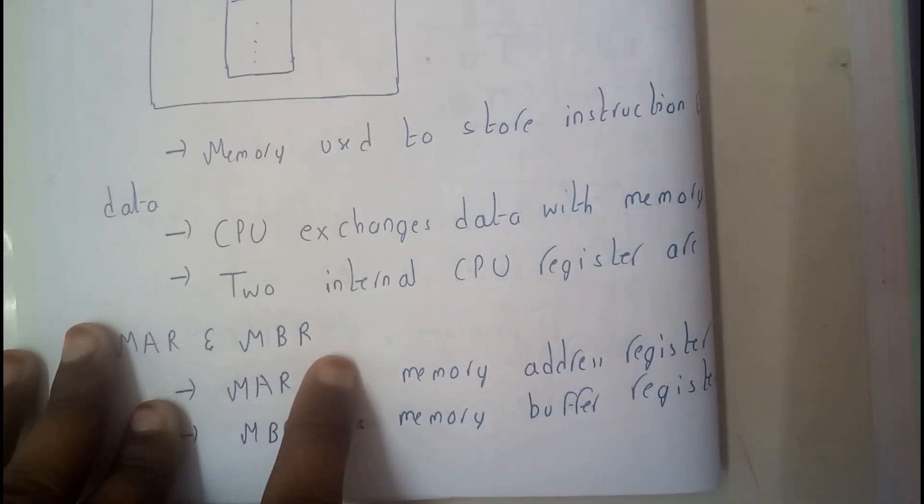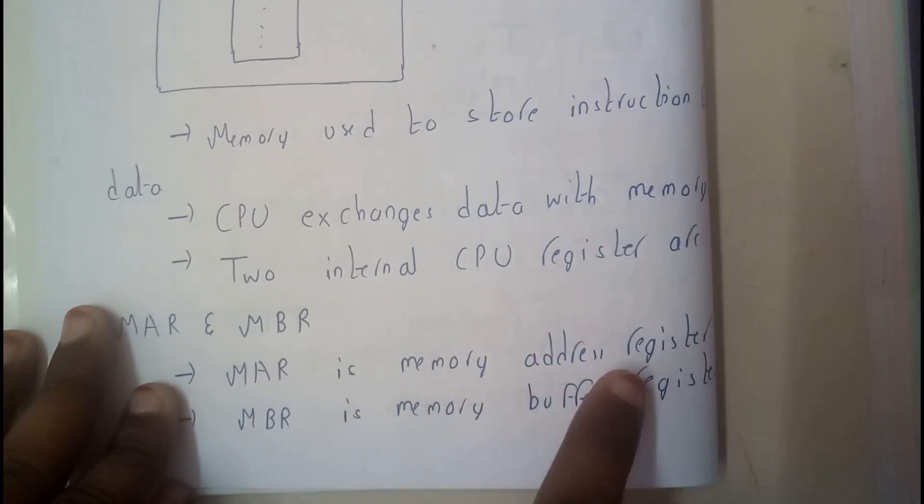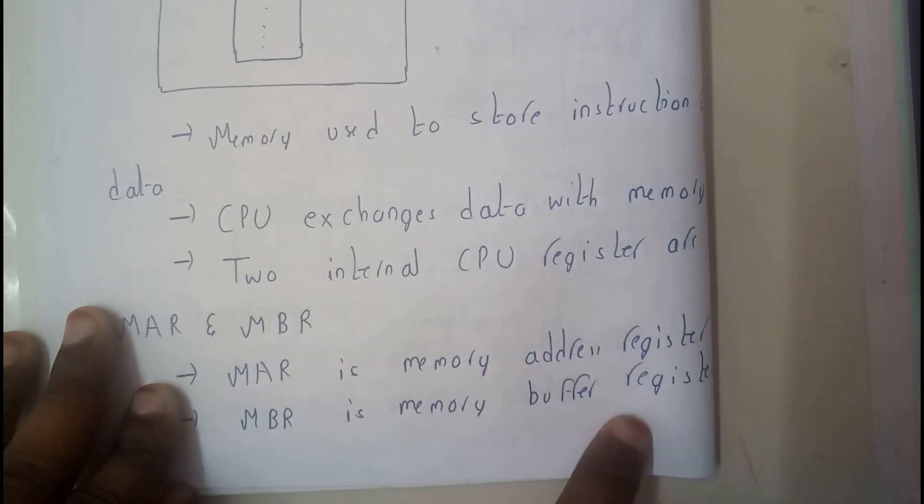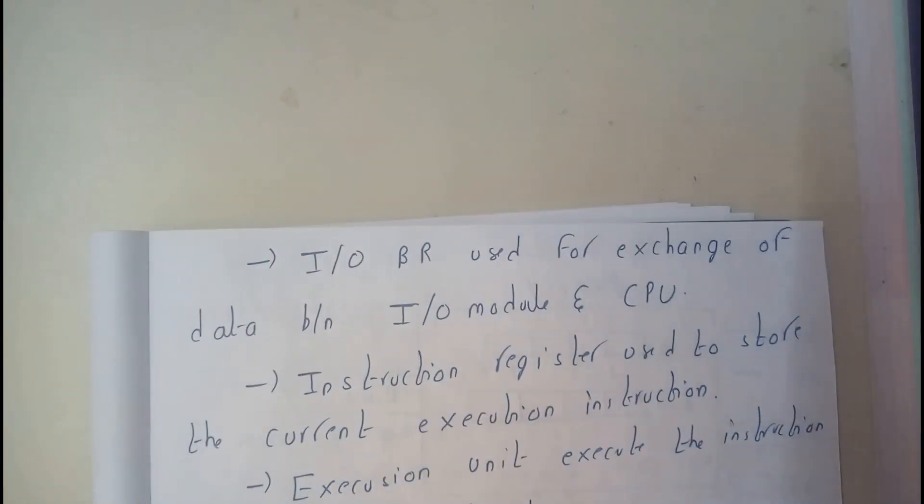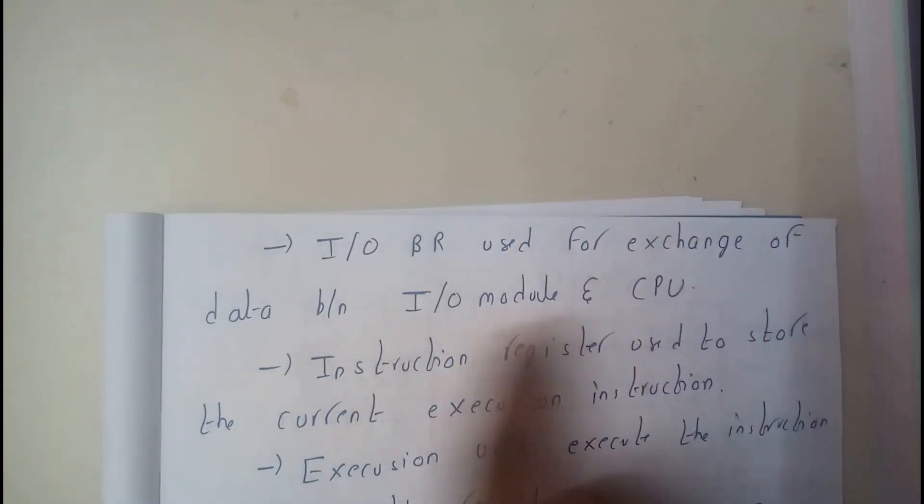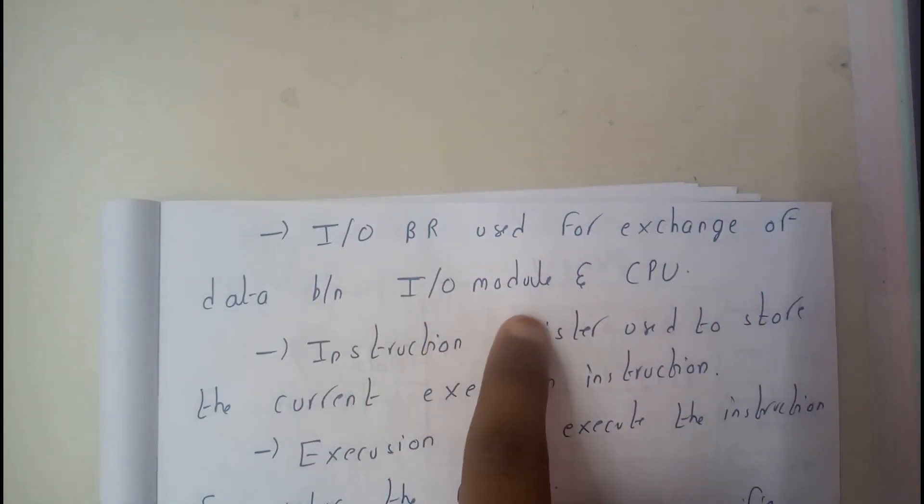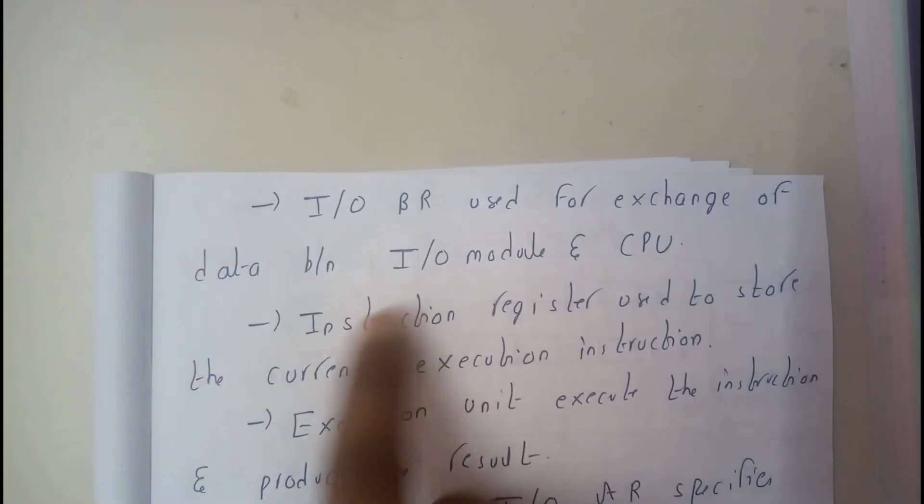Two internal CPU registers are used to transfer data: MAR and MBR. Those are nothing but memory address register and memory buffer register. These two are used to transfer the data into the memory. We are also having I/O BR, used to exchange the data between I/O module and CPU.